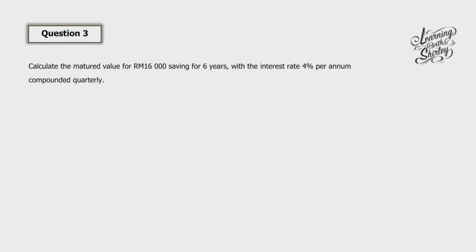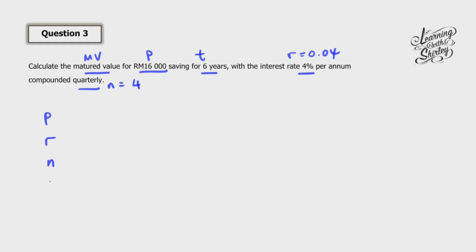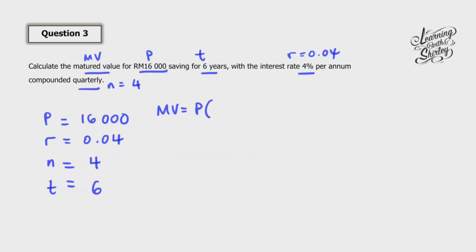Let's look at question number 3. Calculate the matured value for 16,000 ringgit saving for 6 years with an interest rate 4% per annum, compounded quarterly. So P is 16,000, T is 6, R is 0.04, and compounded quarterly means N equals 4. We list down: P is 16,000, R is 0.04, N is 4, T is 6. Substituting into the formula: MV equals 16,000 bracket 1 plus 0.04 over 4, to the power of 4 times 6.